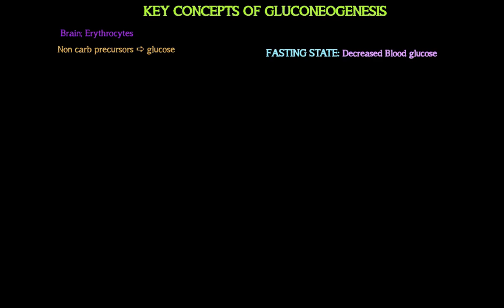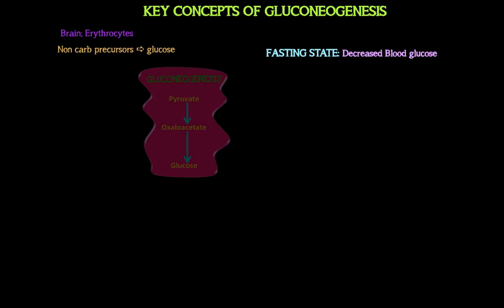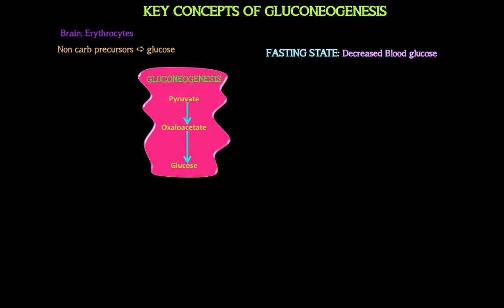Gluconeogenesis is basically converting pyruvate to glucose. It is not the exact reversal of glycolysis — that was discussed in other videos. And as mentioned, it uses non-carbohydrate precursors, so you need to learn the three common ones.